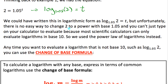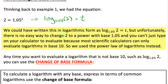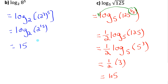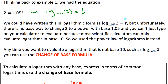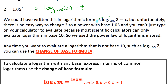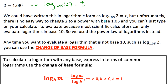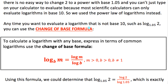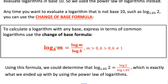So if your calculator doesn't let you change the base, you'll have to use the change of base formula, which only involves the common logarithm. We could have written this in logarithmic form, but there's no easy way to change 2 to a power with base 1.05 — it's not as easy as changing 8 to 2 cubed or 125 to 5 cubed. So we'd ask the calculator using the change of base formula: we can rewrite a log with any base as a quotient of common logarithms.